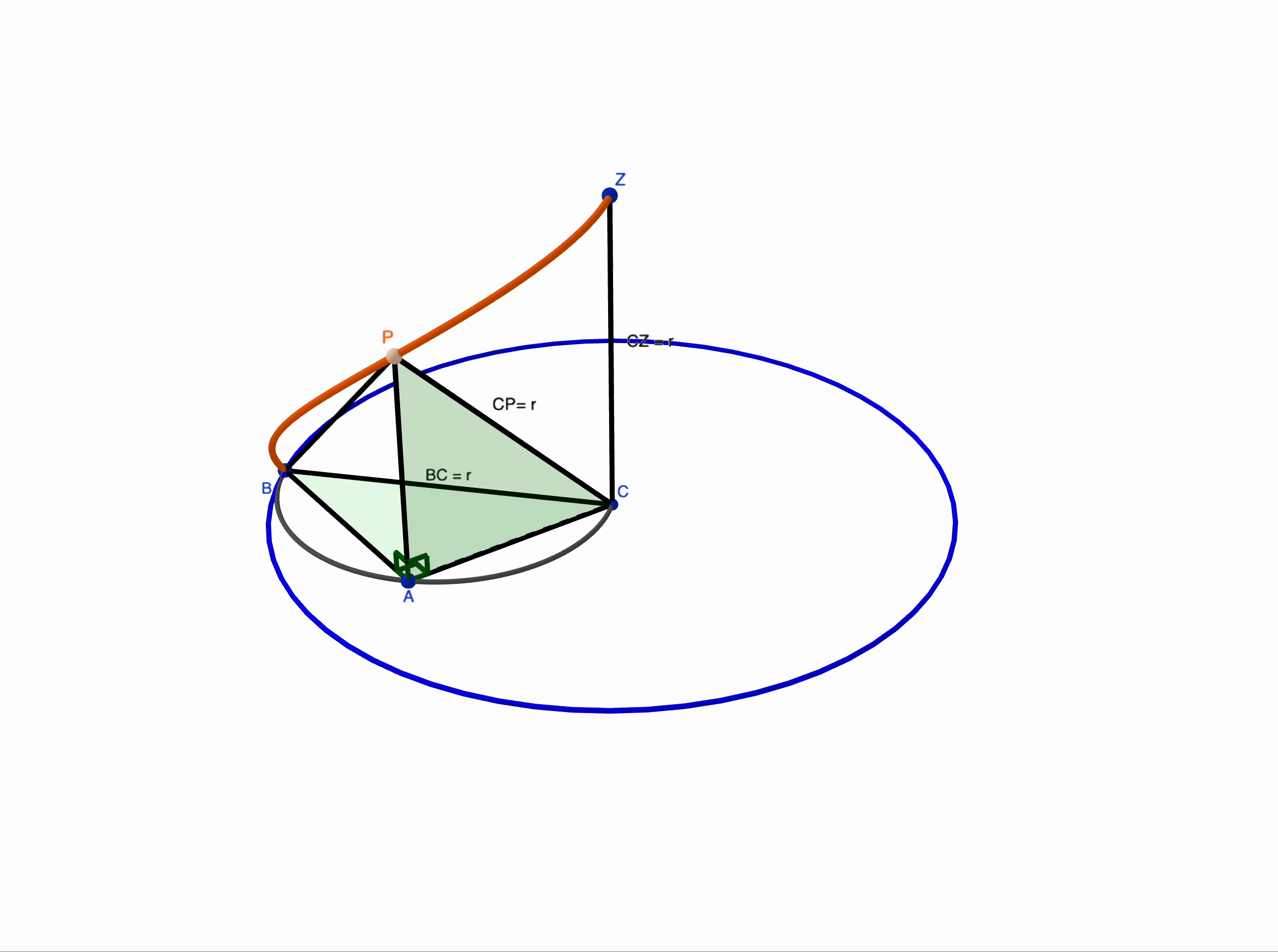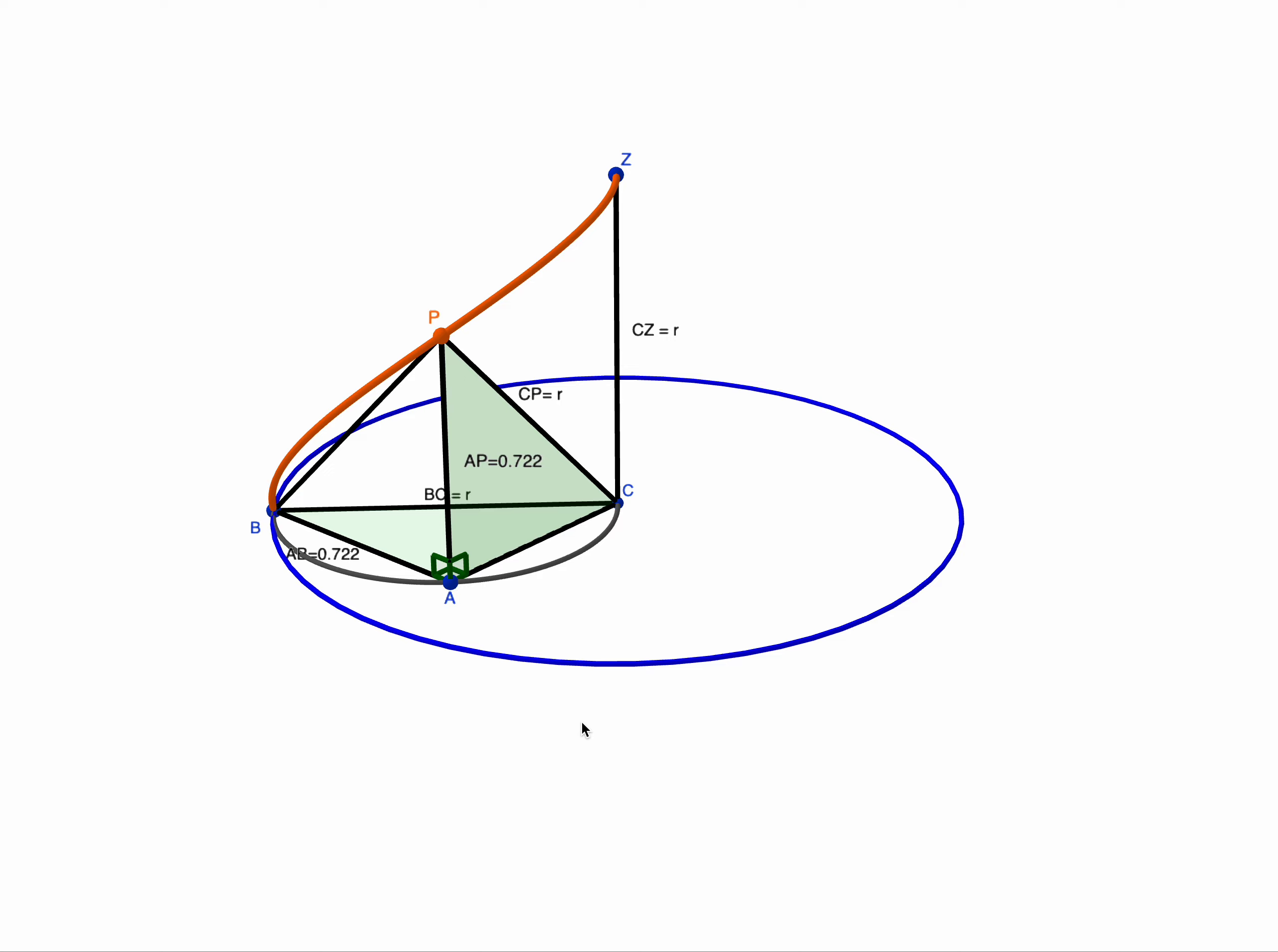Now, of course, from that we want to make a deduction about some lengths. And these two lengths, AP and AB, you can see numerically they're equal, no matter where P is. But we're not interested in the numerical result, we're interested in the fact that these are equal always. So AP is equal to some length L, AB is equal to the same length L.